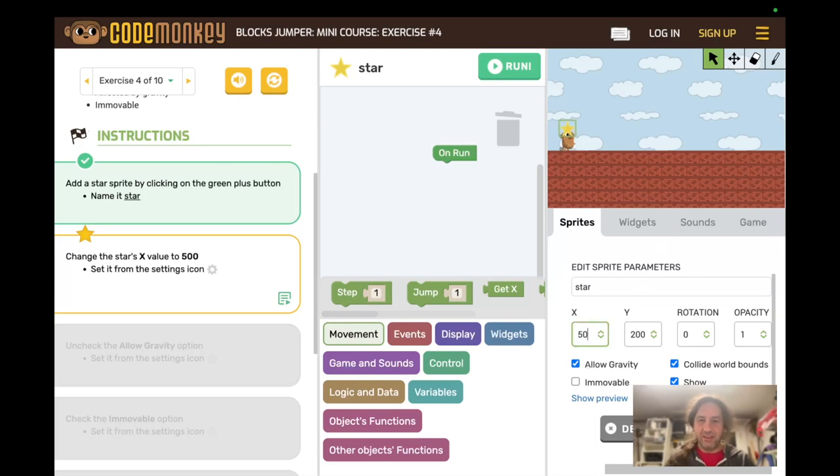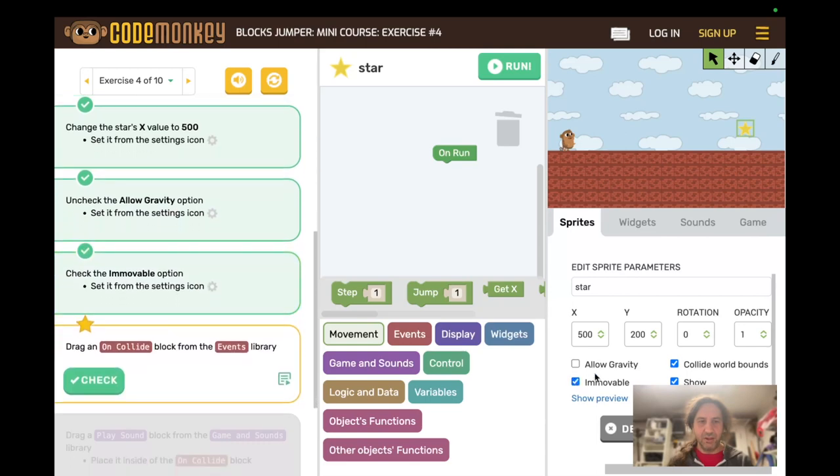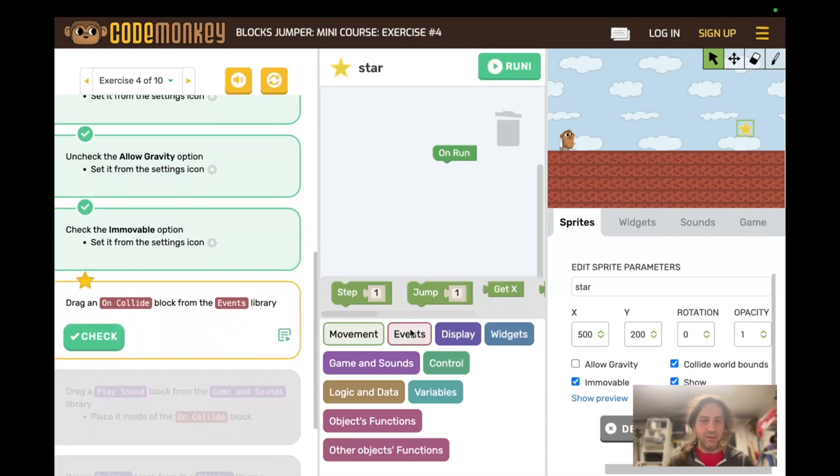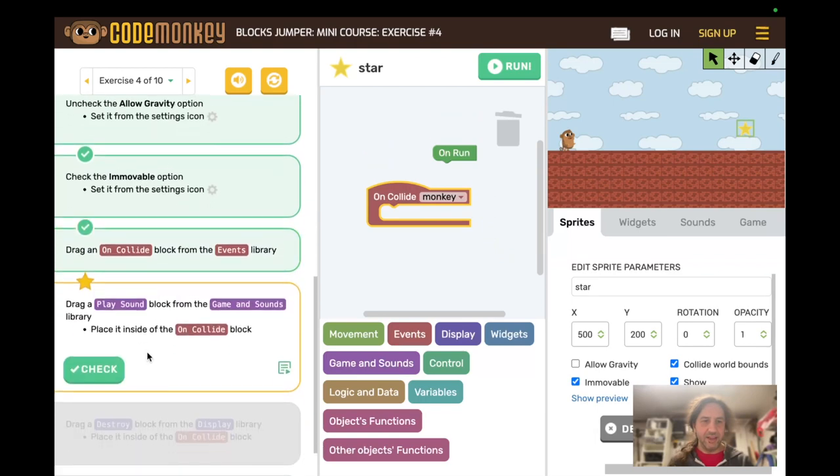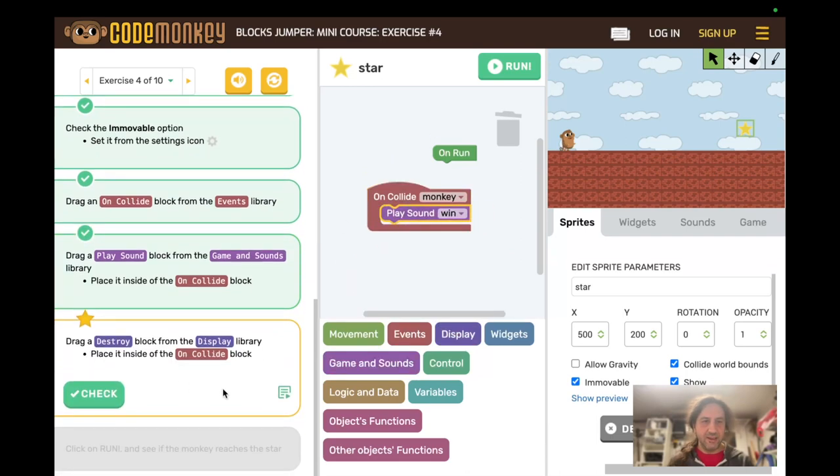And change that to 500. And then allow gravity. Again can be hard to find. Uncheck. And then check immovable. Then we go to events library and drag the on collide. Check. And then game and sounds library. We want a play sound. Check. And another destroy from the display.